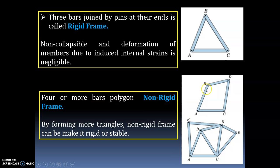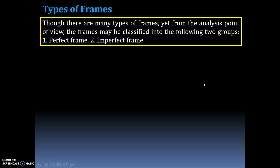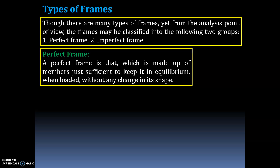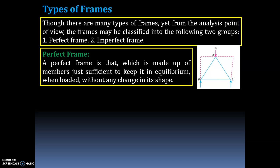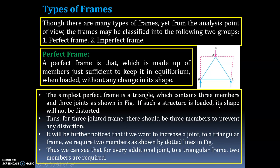From an analysis point of view, frames may be classified into two groups: perfect frames and imperfect frames. A perfect frame is one which is made up of members just sufficient to keep it in equilibrium when loaded, without any change in its shape. The simplest perfect frame is a triangle, which contains three members and three joints.